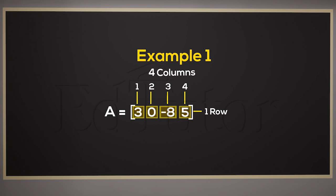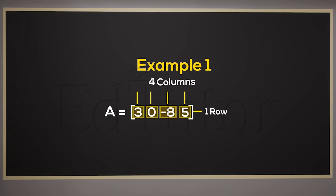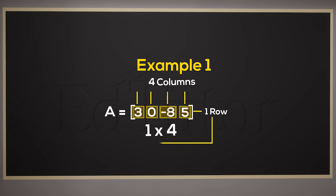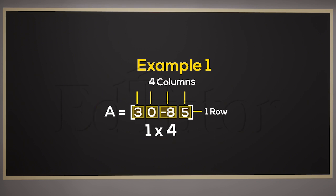But that's not all. The critical thing you must know about every matrix is its order. Since matrix A has one row and four columns, its order will be 1 by 4. Hence, the order is nothing but a representation of rows and columns in a matrix, where the number of rows is written first, followed by the number of columns. And that makes 1 by 4 and 4 by 1 two very different things.